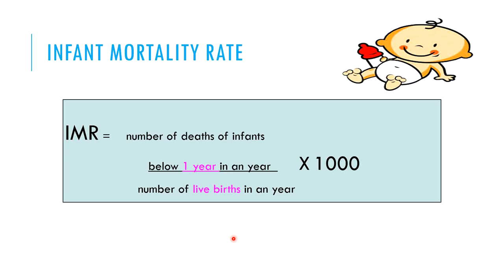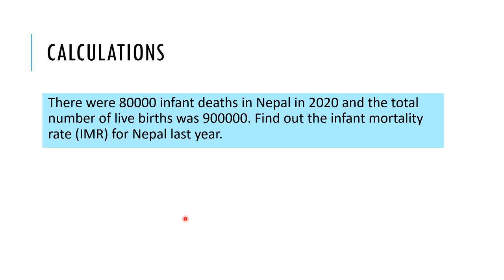The infant mortality rate tells us about available resources targeted toward pregnant females and newborns, their utilization rate, and the effectiveness of healthcare service provision. Whenever we compare different countries, the first and most important indicator is the infant mortality rate. As a calculation exercise: there were 80,000 infant deaths in Nepal in 2020, and the total number of live births was 900,000. Calculate the infant mortality rate for Nepal.